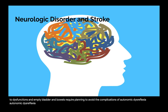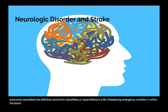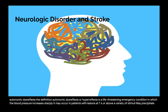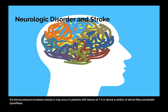Autonomic dysreflexia, also called hyperreflexia, is a life-threatening emergency condition in which the blood pressure increases sharply. It may occur in patients with lesions at T6 or above. A variety of stimuli may precipitate dysreflexia, including irritation to the bowel or bladder distension.